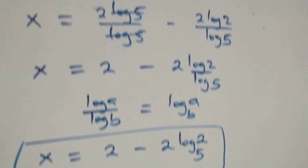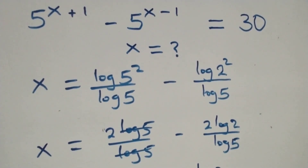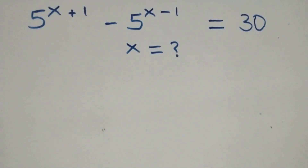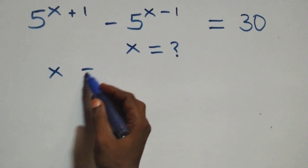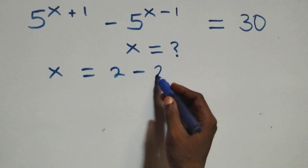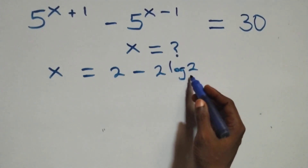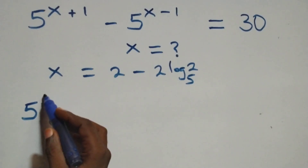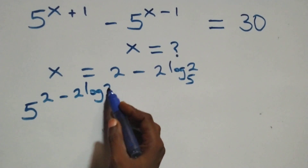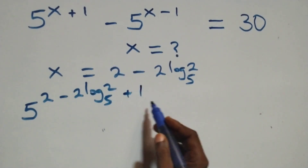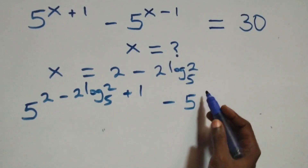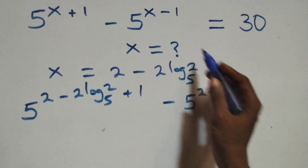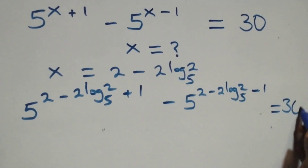Let's check whether this satisfies the given problem. We substitute x equals 2 minus 2 log₅2 into the equation, giving 5 raised to power (2 minus 2 log₅2 plus 1) minus 5 raised to power (2 minus 2 log₅2 minus 1), and this should equal 30.